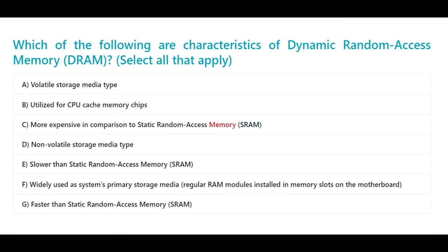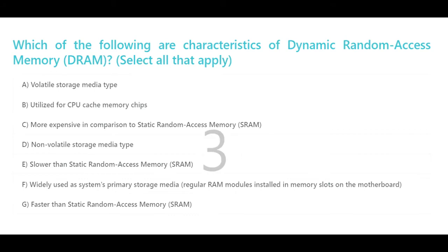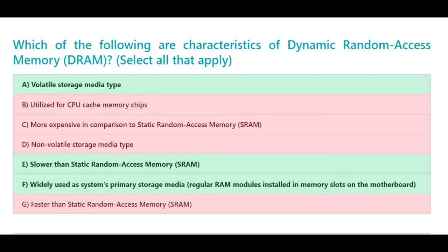The correct answers for DRAM characteristics are: A. Volatile storage media type. E. Slower than static random access memory (SRAM). F. Widely used as the system's primary storage media — regular RAM modules installed in memory slots on the motherboard. H. Less expensive in comparison to static random access memory (SRAM).